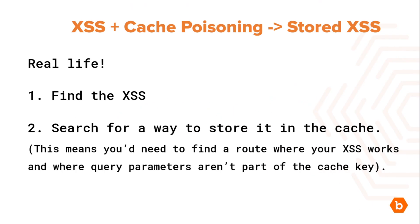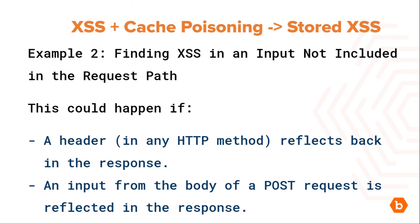If this happens, you are very lucky — it's not common, but it's a great example to understand how this works. In a more realistic scenario, this could happen if, once you find the XSS, you search for a way to store it in the cache. This means you'd need to find a route where your XSS works and where query parameters aren't part of the cache key. Example 2: finding XSS in an input not included in the request path.